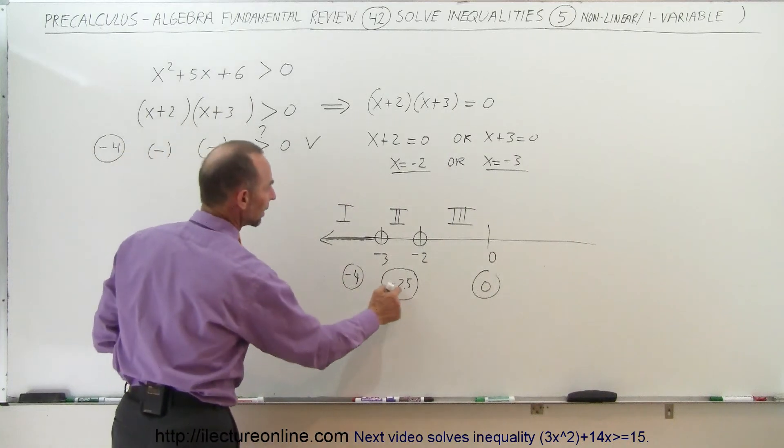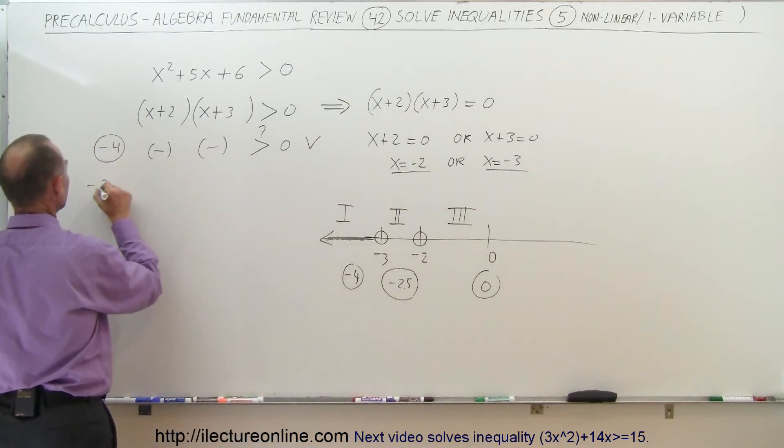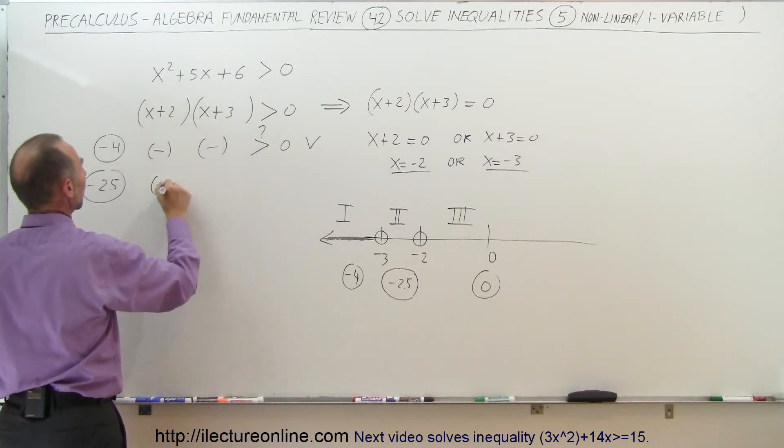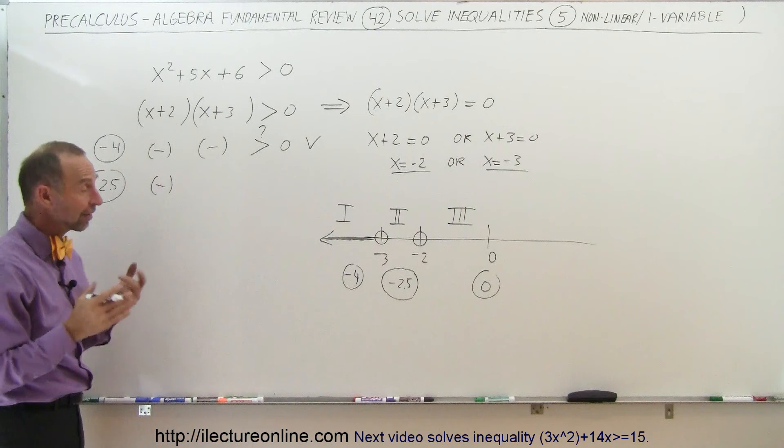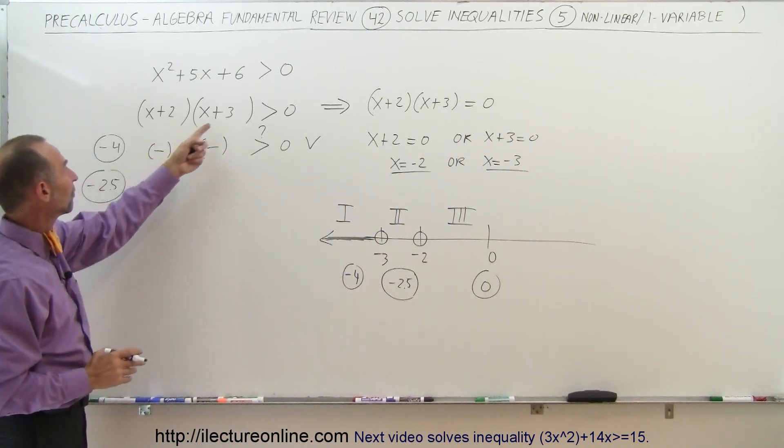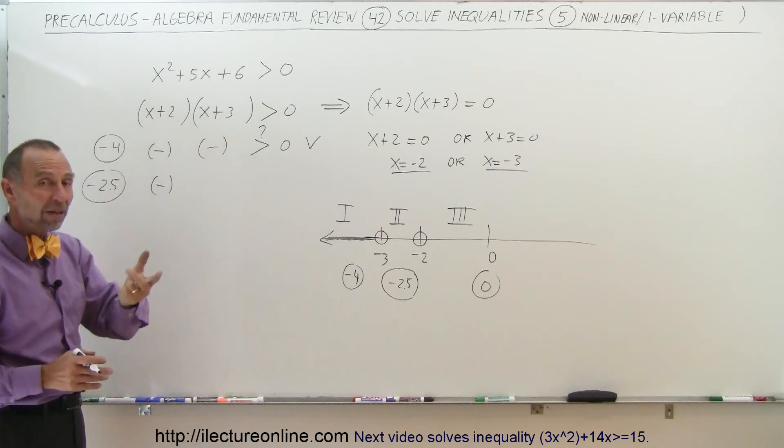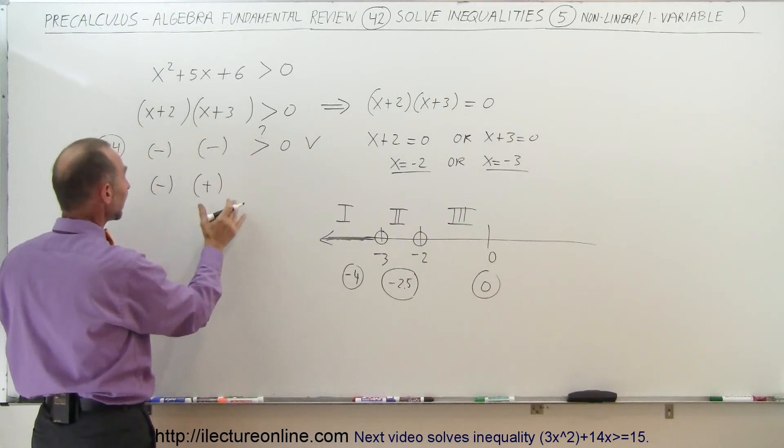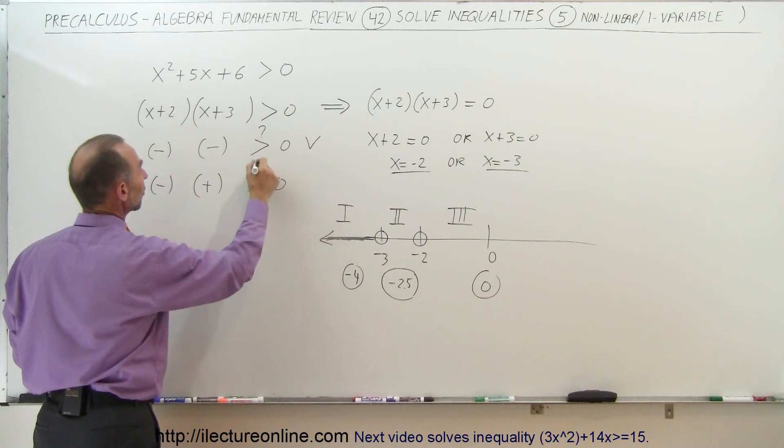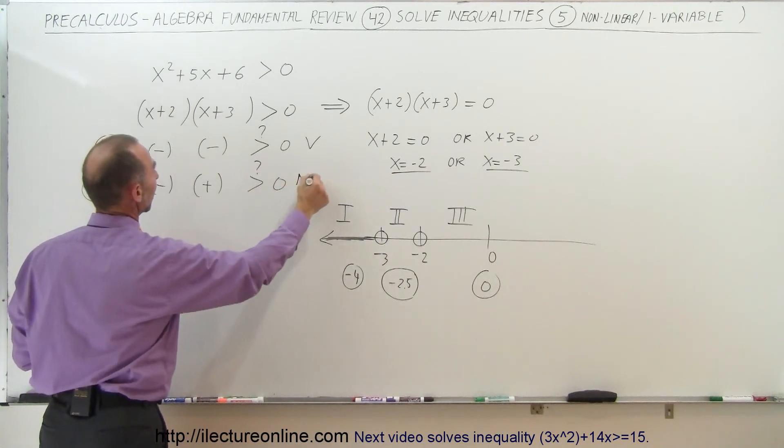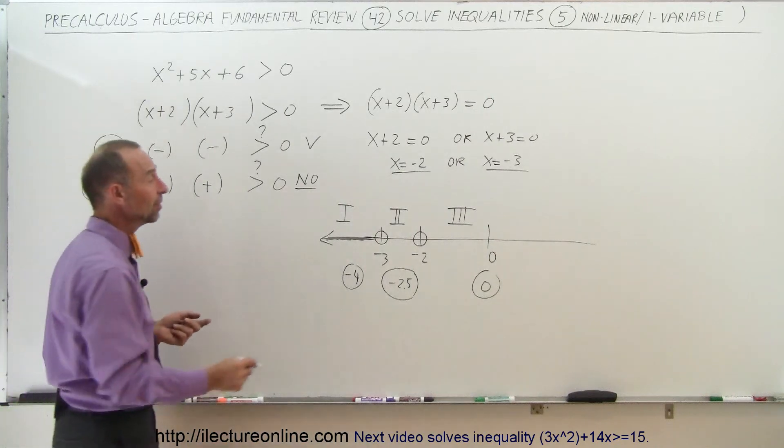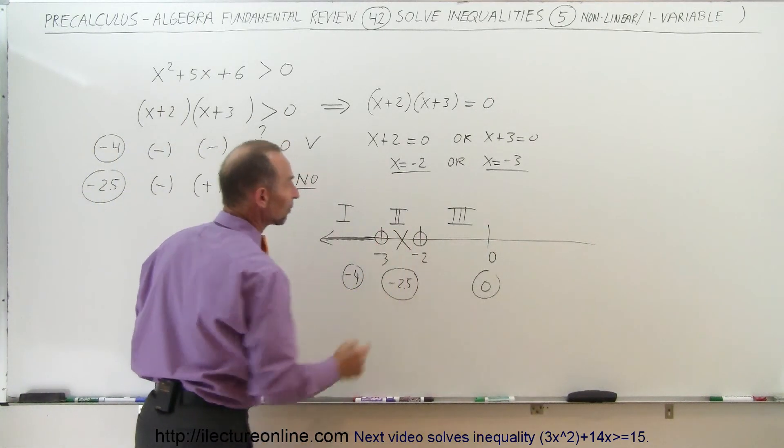Okay, now we try another point, negative 2.5. When we plug a negative 2.5 in here, negative 2.5 plus 2 will give us a negative quantity, because that's negative a half. That's negative. And negative 2.5 plus 3 gives us a positive quantity plus 5. And when we multiply a negative times a positive quantity, we get a negative quantity. And is that greater than zero? And the answer is no. Because a negative number can never be greater than zero, which means this region is not part of the solution.